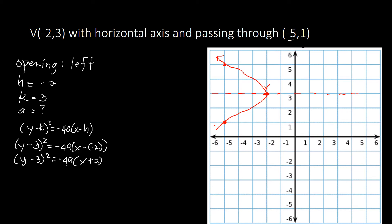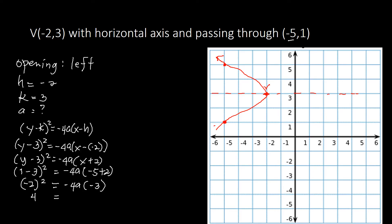We substitute the point (−5, 1) into the equation. With Y = 1 and X = −5: (1 − 3)² = −4A(−5 + 2), so (−2)² = −4A(−3), giving 4 = 12A. Dividing both sides by 12, A = 4/12, which simplifies to A = 1/3.